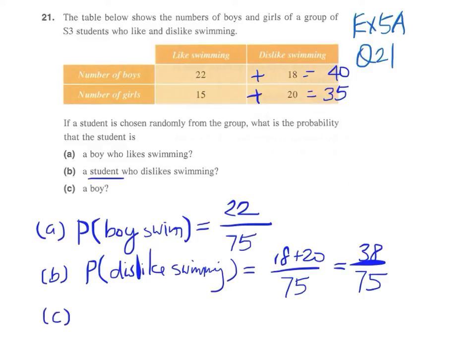Finally, for part (c), the selected student is a boy. Again, we have 75 as the denominator, and out of these 75 students, we have a total of 40 boys: 22 plus 18. So this will be 40 over 75. We can simplify this to 8 over 15.